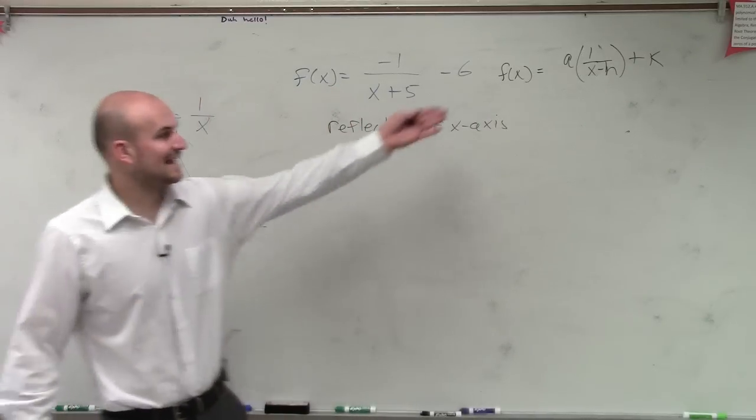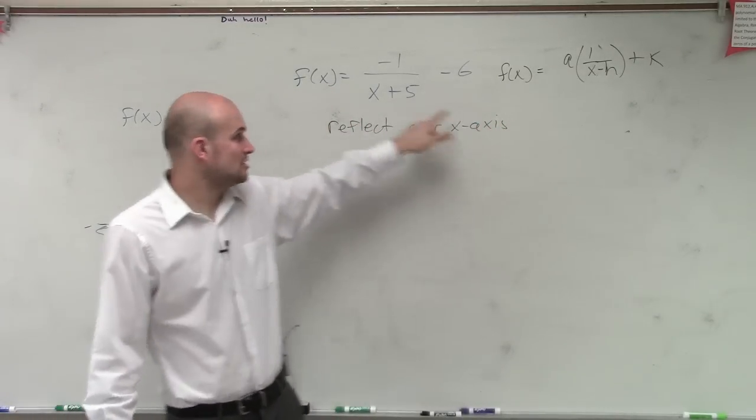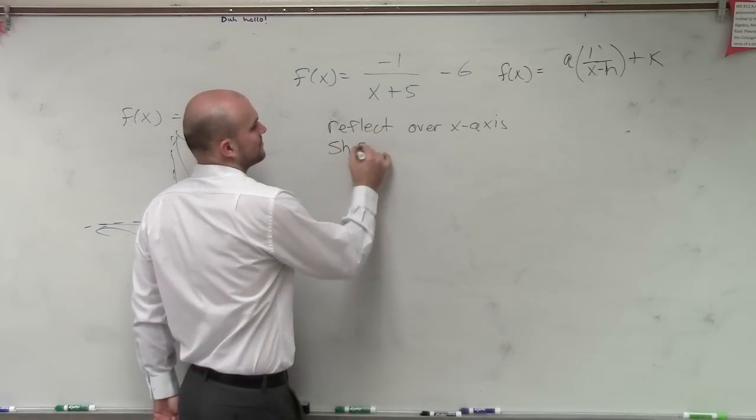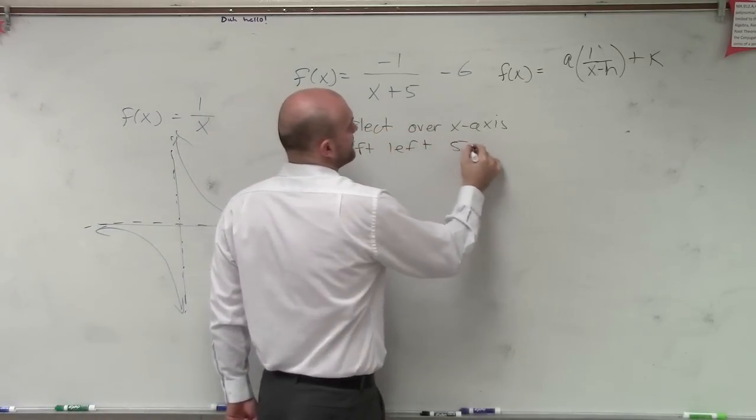Then my h, remember, tells me to shift left or right. So in looking at this, since I have plus 5, I'm going to shift left 5 units.